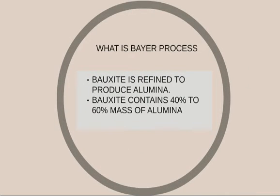What is the Bayer process? Bauxite is refined to produce alumina. Bauxite contains 40% to 60% mass of alumina.